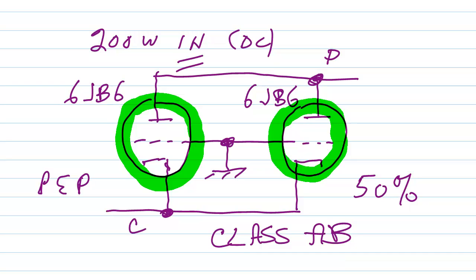It doesn't have to be linear necessarily for the waveform. The efficiency of this thing was also about 60%. So if you ran 200 watts input, you would get about 120 watts RF power output from the combination of these tubes. That would be 60 watts per tube.